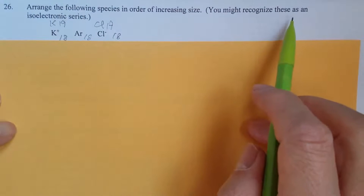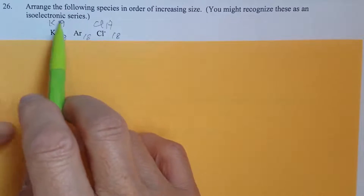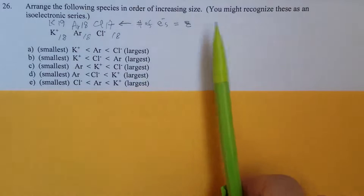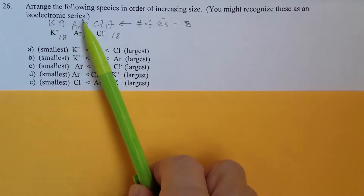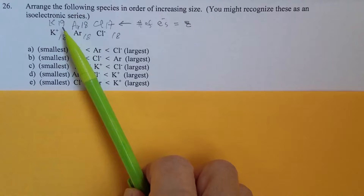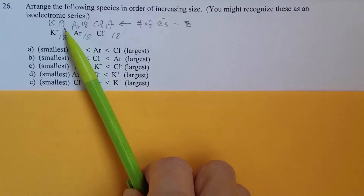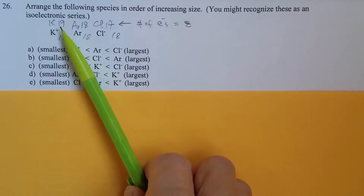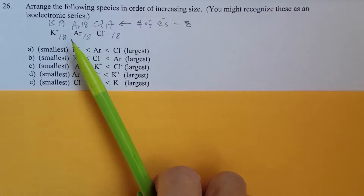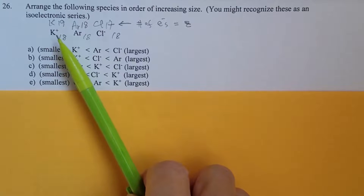So therefore we call this an isoelectronic series. Within an isoelectronic series, the one that has the highest number of protons, or higher atomic number, should have the smallest size, because it has more protons to attract the same number of electrons. So therefore it's a little bit tighter, making that species much smaller.